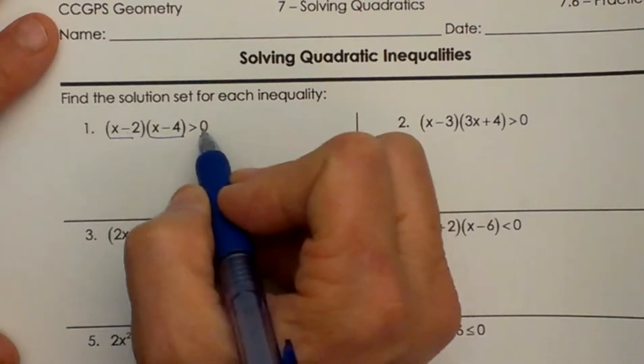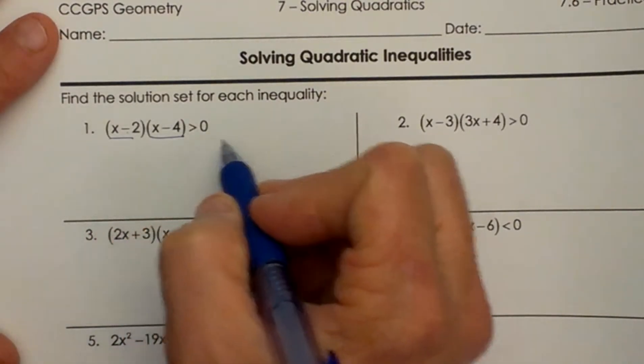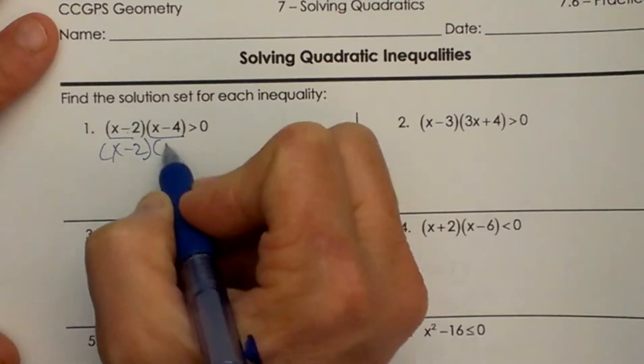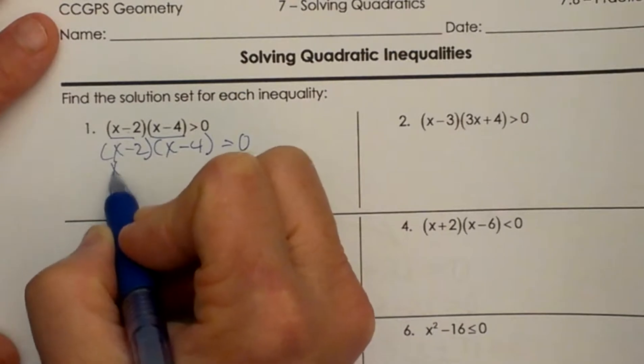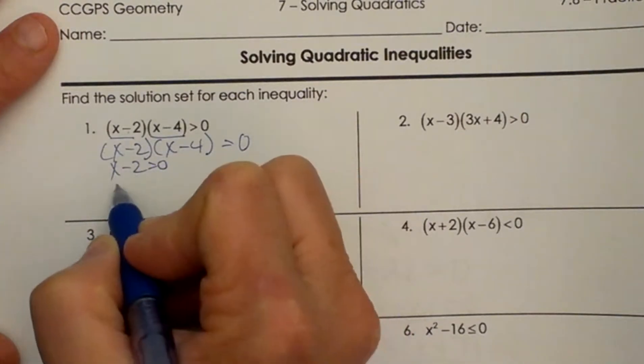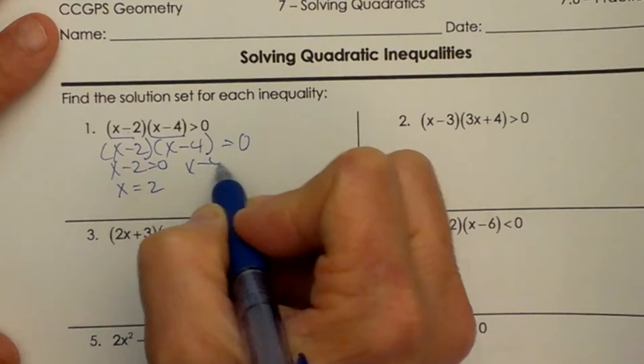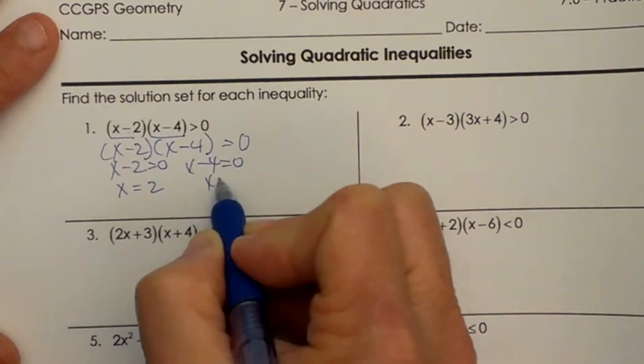You start off thinking let's just think of it as equal to 0. So think of it as an equation first and let's get our critical points. And our critical points are where x minus 2 equals 0 which is where x is 2 and where x minus 4 equals 0 and that is where x is 4.